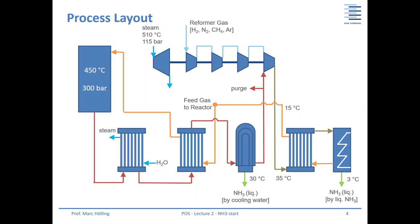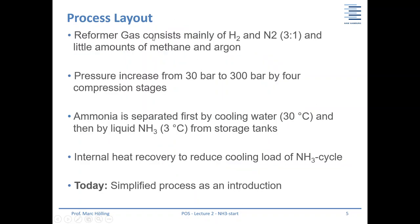To summarize the layout from the Ullmann's reference: the reformer gas consists mainly of H₂ and N₂ in a ratio of approximately 3:1 (three moles of hydrogen per mole of nitrogen), plus small amounts of methane and argon. A pressure increase from 30 bars to 300 bars is achieved by four compression stages. Ammonia is separated first by cooling water, then by liquid ammonia from storage tanks.